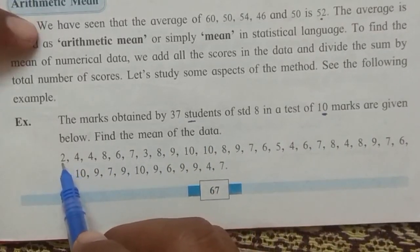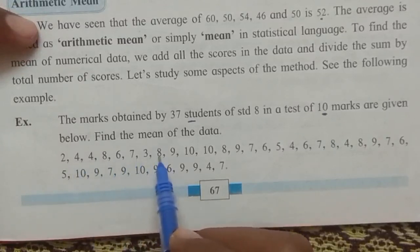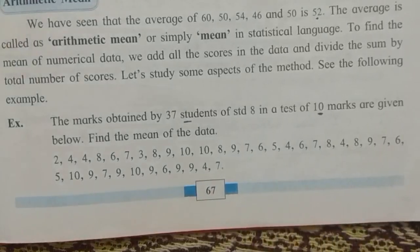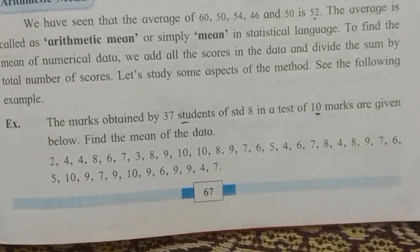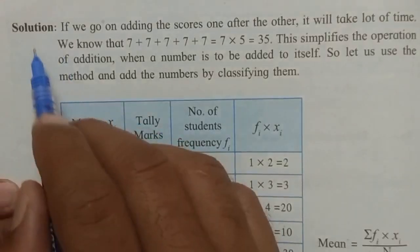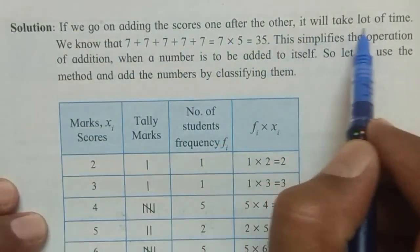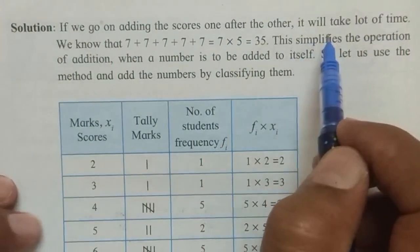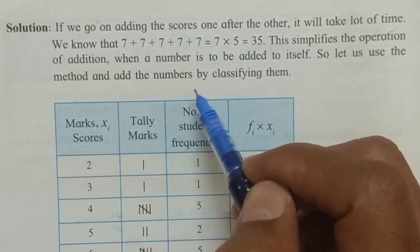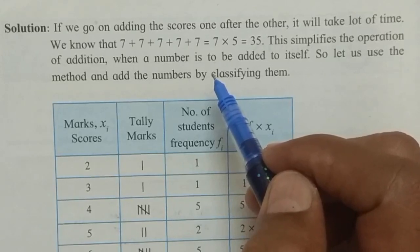The first student got 2 marks, second got 4, then 4, 8, 6, 7, 3, 8, 9, 10, 10, 8, 9, 7, 6, 5, 4. Now, if we go on adding the scores one after the other, it will take a lot of time. If the data were related to people of a state, district, or country, the dataset would be very large — total addition would not be feasible.